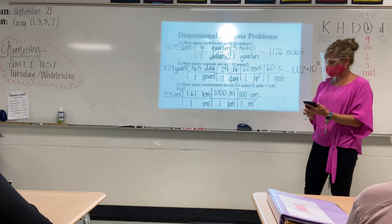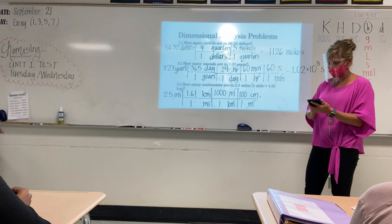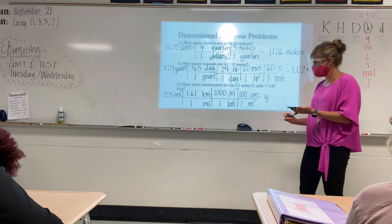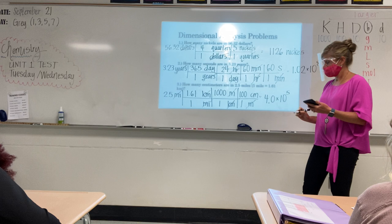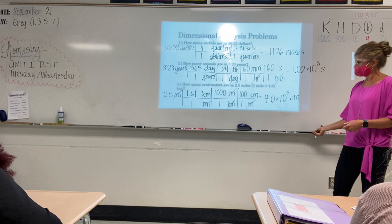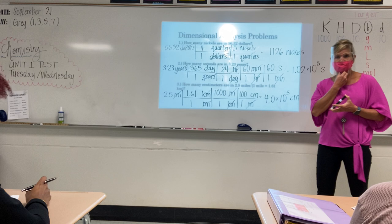Multiply across the top — all of these are multiplied. How many sig figs do we need? Two. So we get 4.0 times 10 to the fifth centimeters. Not too bad!